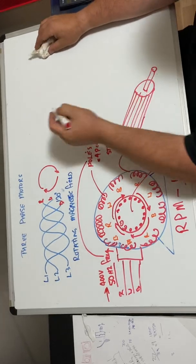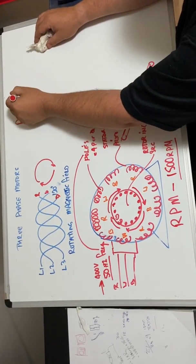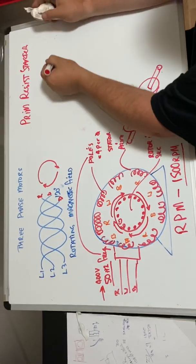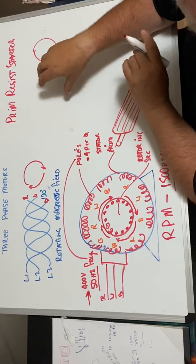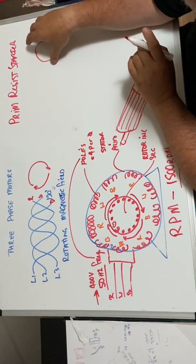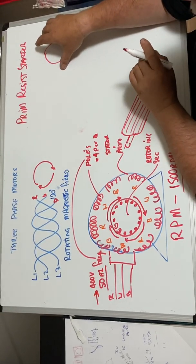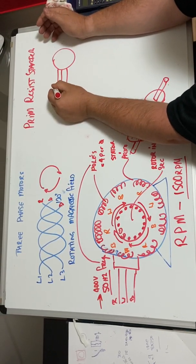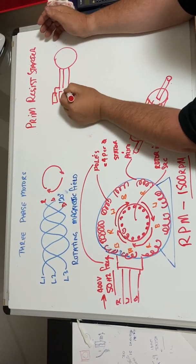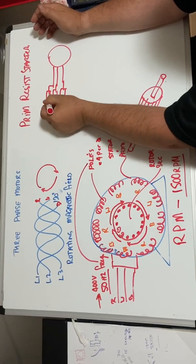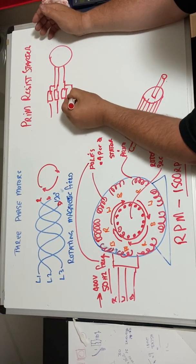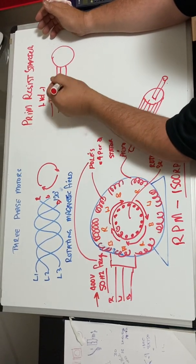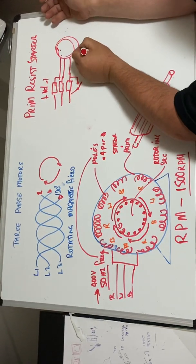The next one is we have a primary resistance starter. All these starters we're getting are reducing the voltage before it gets to the motor. If we do that, we'll change the voltage or do something like that - we change the speed of the motor. A primary resistance starter basically has a set of resistors which are in parallel with the starting, and then they get bridged out with a contactor.